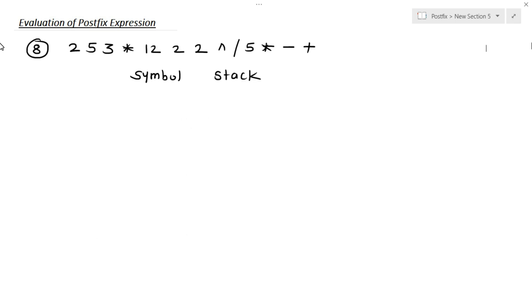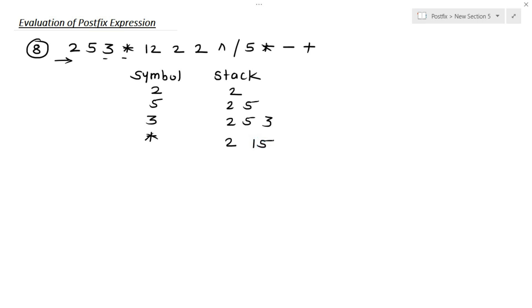Now let's see the last example. The expression is: 2 5 3 multiplication 12 2 2 exponential division 5 multiplication minus plus. We scan symbols from left to right. The first symbol is 2, into the stack. Second is 5, into the stack. Next is 3; the stack has 2, 5, and 3. Then multiplication: top of the stack are 5 and 3, so 5 multiplied by 3 equals 15; 2 remains. Next symbol is 12; the stack has 2, 15, and 12. Next is 2; the stack has 2, 15, 12, and 2.